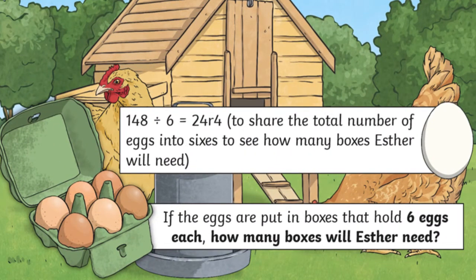Well done! Hopefully you worked out that the next step should now be to share the total number of eggs into sixes to see how many boxes Esther will need. So 148 divided by 6 gives us 24 remainder 4. But we're not finished yet.